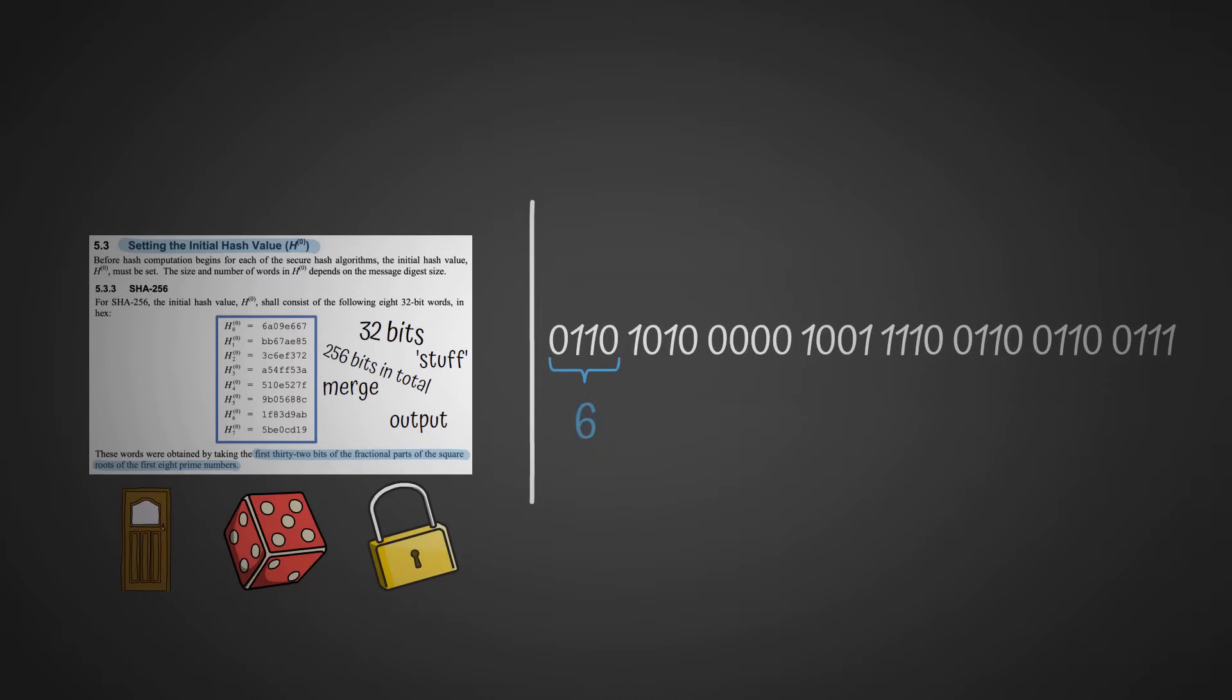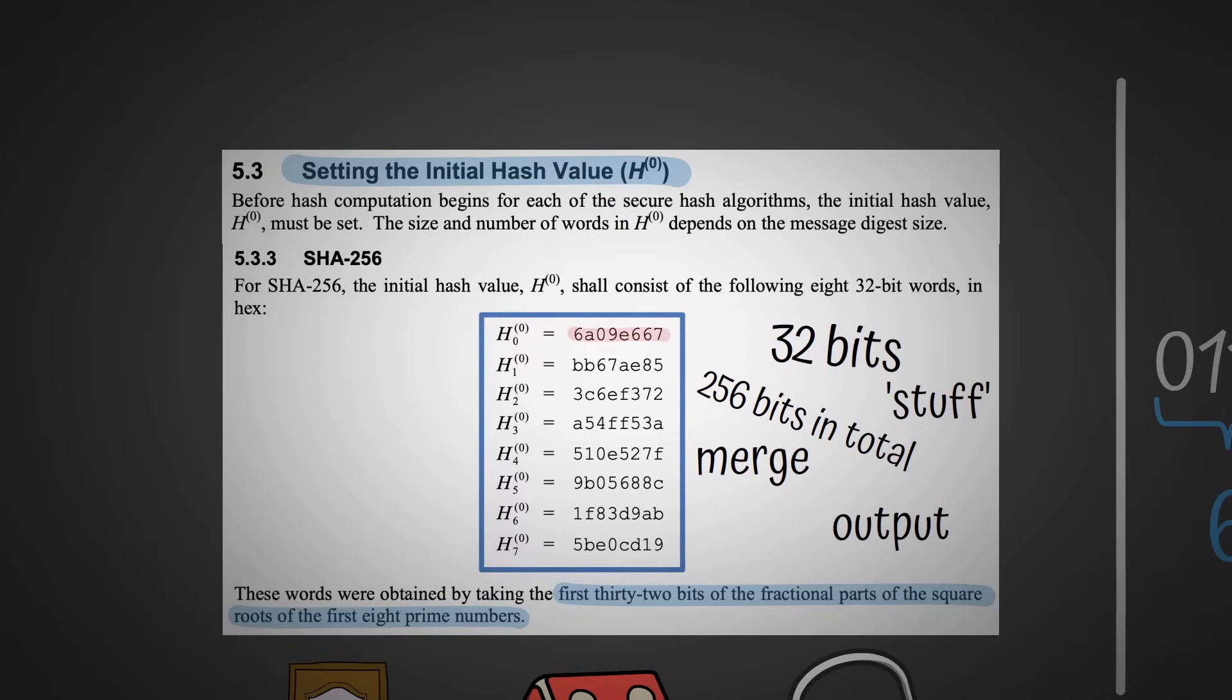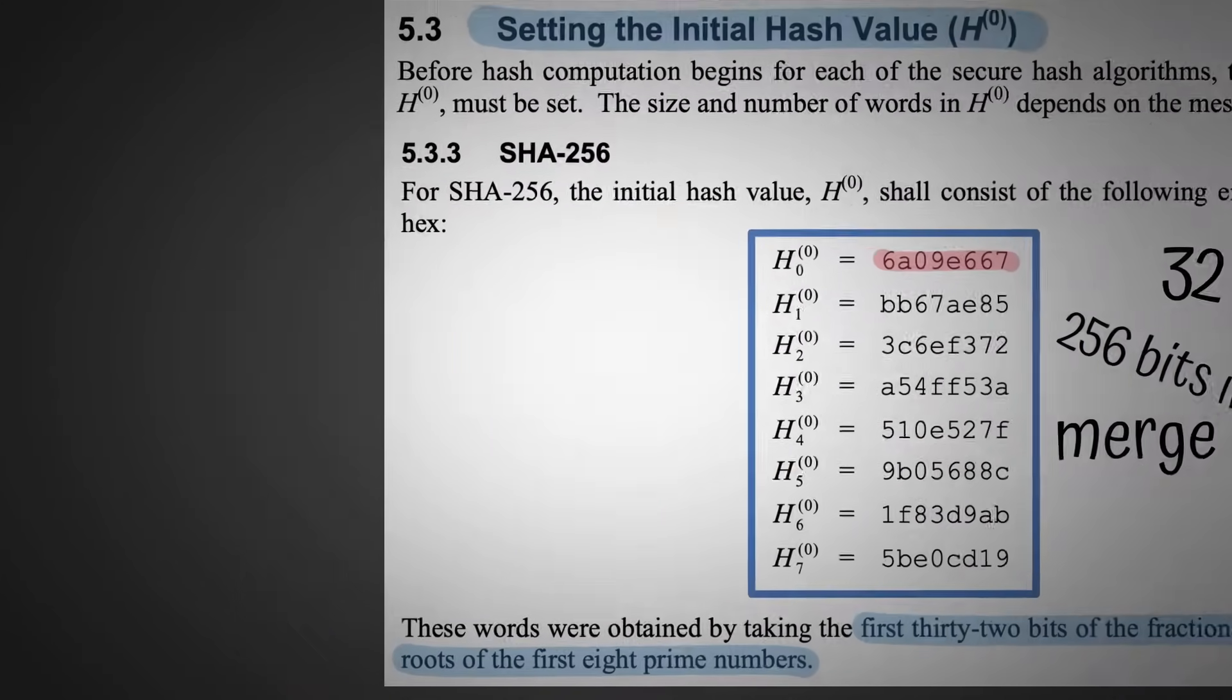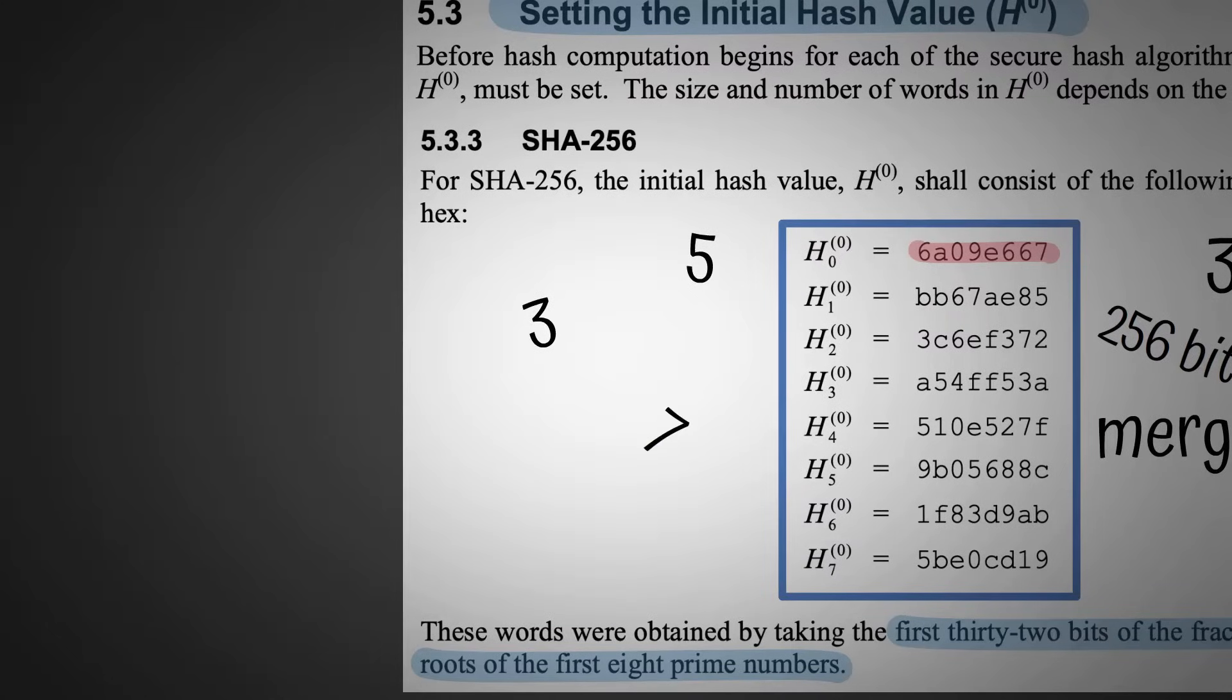Let's convert these 0s and 1s into its hexadecimal format. As you can see, we get H0. To get the other H's, we just do the same thing with the other 7 prime numbers.